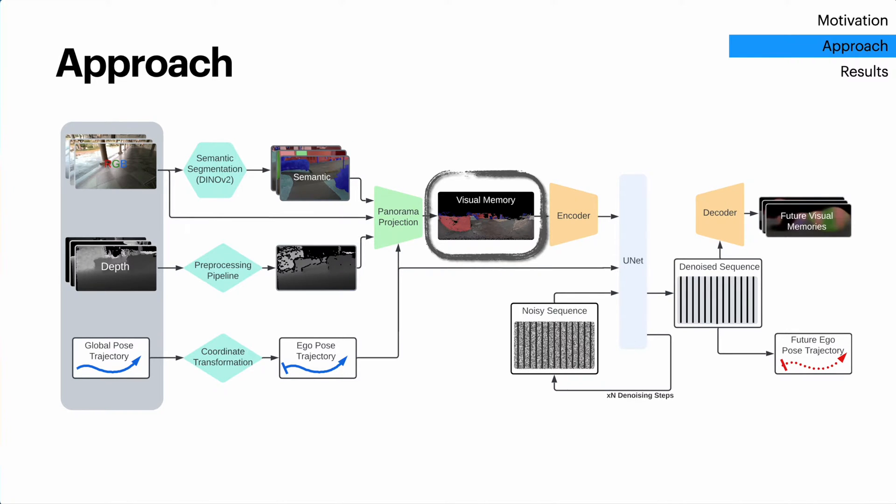Next, we feed this visual memory along with the human's past trajectory into the core of our system: a diffusion model-based prediction module. Diffusion models are particularly good at generating complex, multimodal outputs. In our case, the diffusion model uses the past trajectory and encoding of visual memory to infer likely future paths.